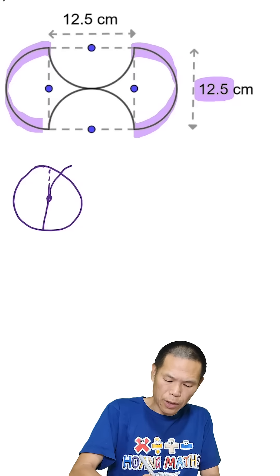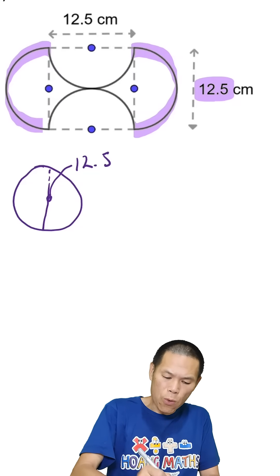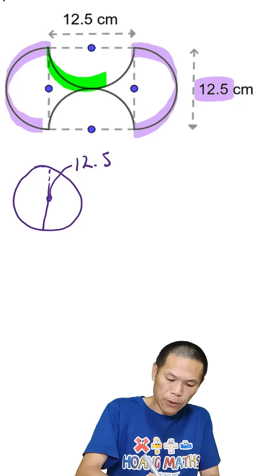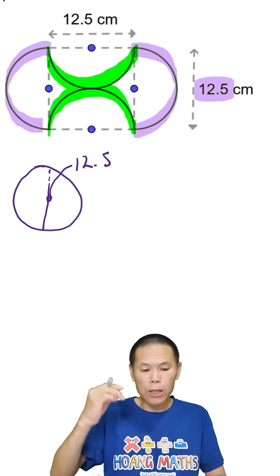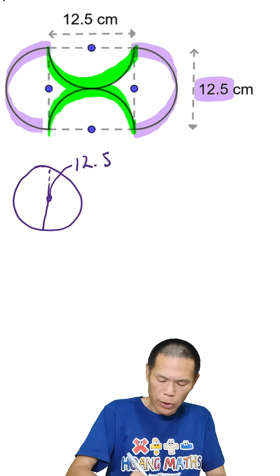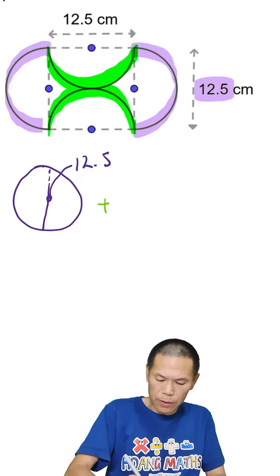We now have this half circle and this half circle, so combined they will give me a circle as well. Let me just draw it out. So we add another circle circumference, and the diameter is 12.5 centimeters.